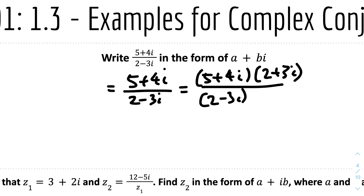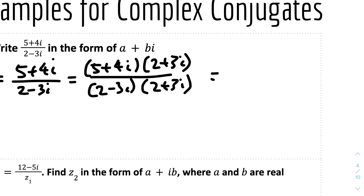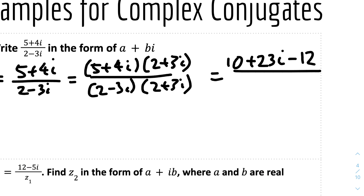So (2 - 3i)(2 + 3i) is the denominator. For the numerator: 5 × 2 = 10. Then 5 × 3i = 15i, and 4i × 2 = 8i, so 15i + 8i = 23i. The last term is 4i × 3i: 4 × 3 = 12, and i × i = -1, so it's -12. The denominator uses the speed tip: 2² + 3² = 4 + 9 = 13.